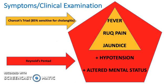Some of the symptoms and clinical examination findings: Charcot's triad is 85% sensitive for cholangitis and consists of three things — fever, right upper quadrant pain, and jaundice. Reynolds' Pentad includes Charcot's triad plus two more: hypotension and altered mental status.